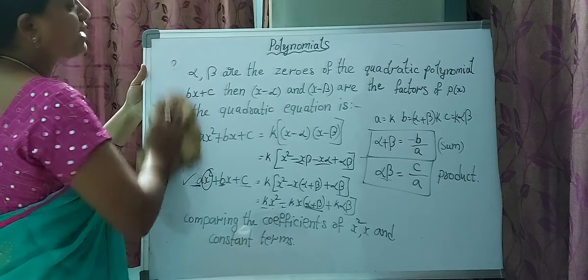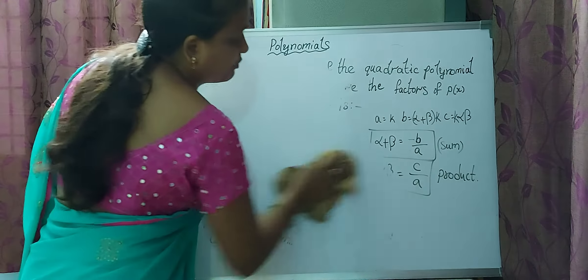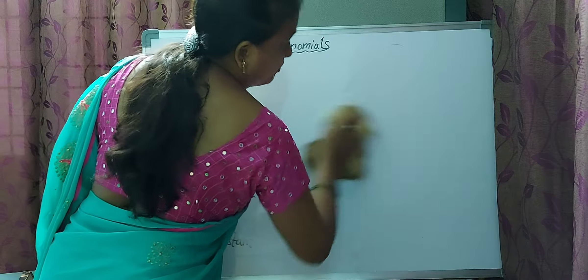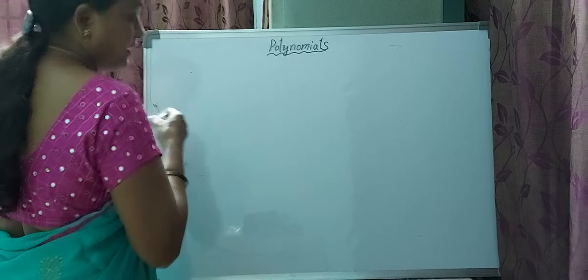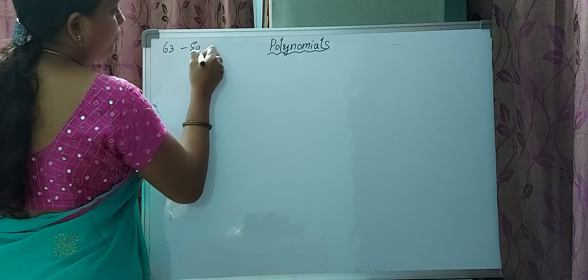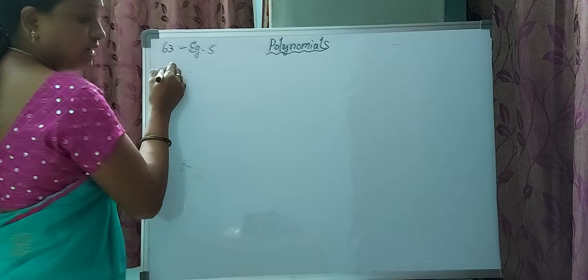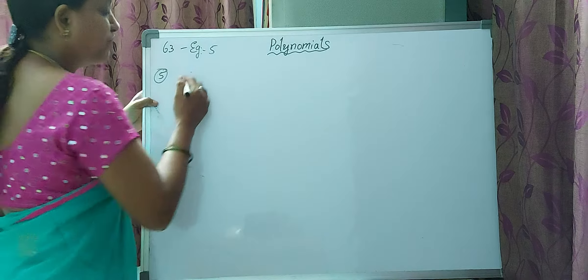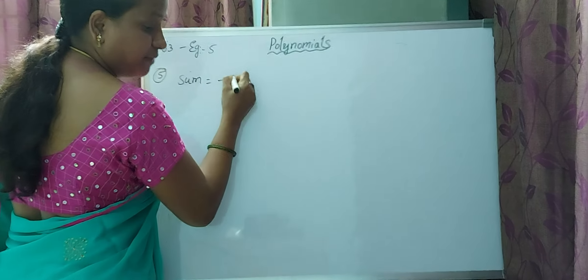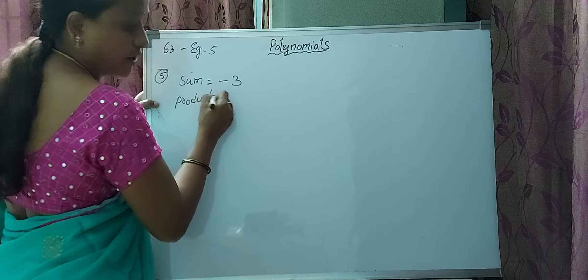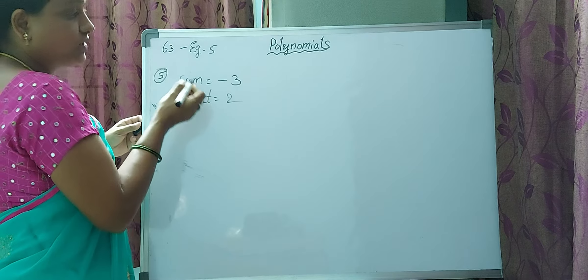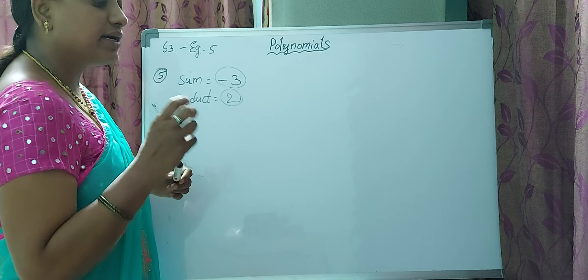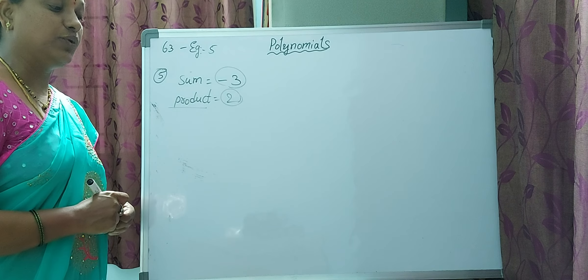Now let's apply this. See page number 63, example 5: find the quadratic polynomial whose sum of zeros is -3 and product of zeros is 2. Both the sum and product are given, and we need to form the quadratic polynomial.